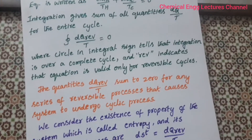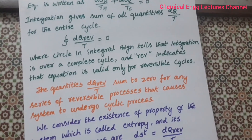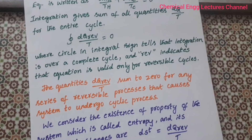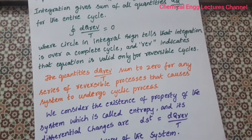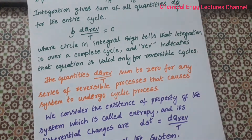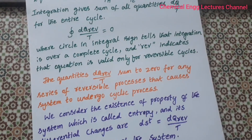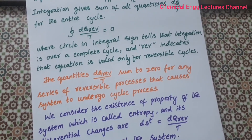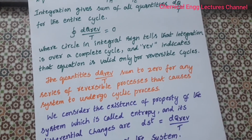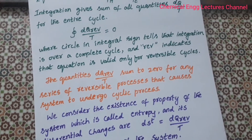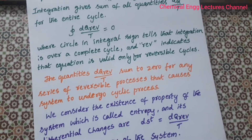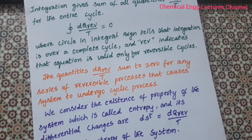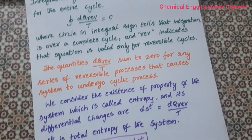Integrating this equation gives the sum of all quantities DQ by T for the entire cycle. The integral over a complete cycle of DQ reversible by T is equal to 0. The circle in the integral symbol indicates integration over a complete cycle, and the subscript reversible indicates the equation is valid only for reversible cycles.